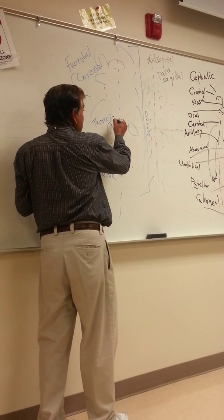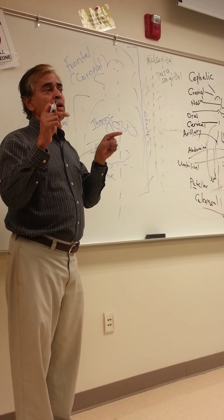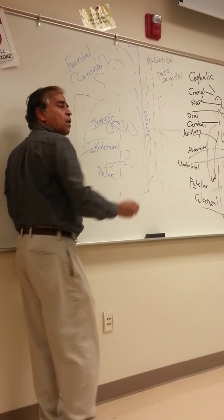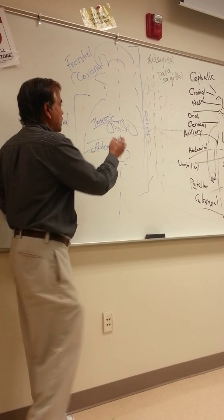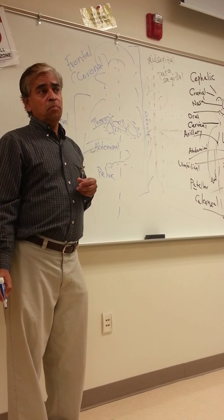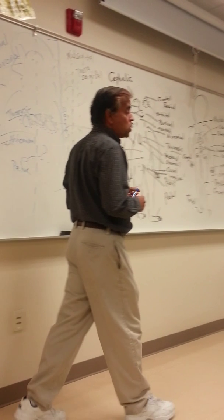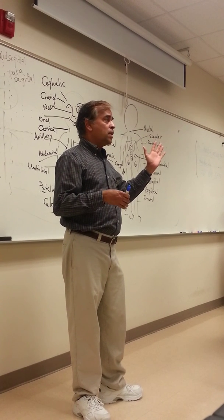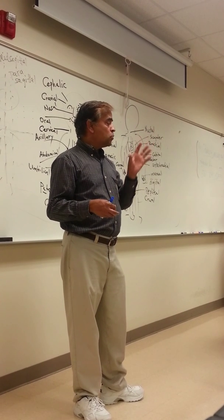The thoracic cavity contains the heart and the lungs — a pair of lungs on either side of the heart. The abdominal cavity has the stomach and most digestive organs. The pelvic cavity has the reproductive organs and lower portions of the intestines. The thoracic cavity is further divided into the pericardial cavity — the space around the heart — and the pleural cavity, the space around the lungs.